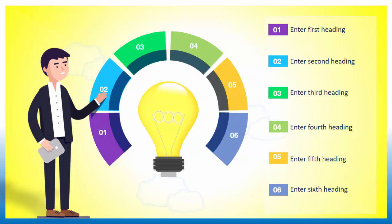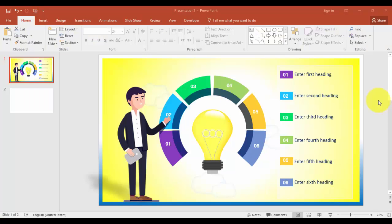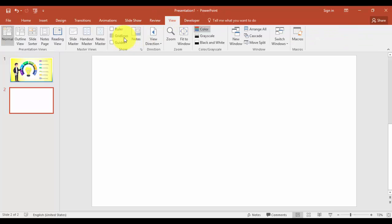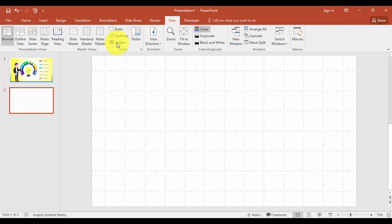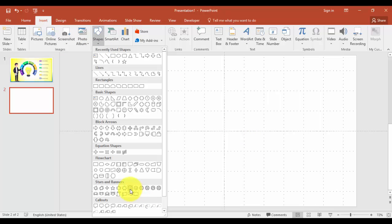Hello friends, welcome to my YouTube channel OSVFX. My name is Abdul Rahman. Today I am going to show you how to design this beautiful infographic template in PowerPoint. Let's start. The first step is to create the circle in six equal parts. Go to blank slide, go to View tab, enable the gridlines and guides, go to Insert Shapes and select Stars and Banners — that is the eight-point star.